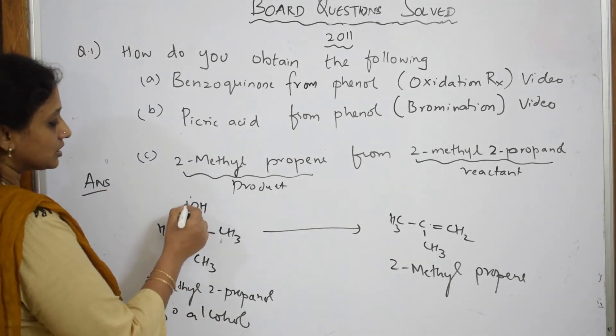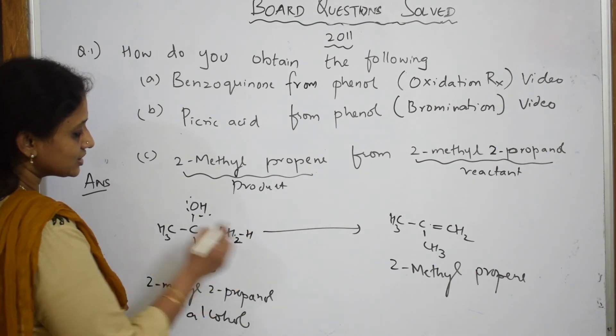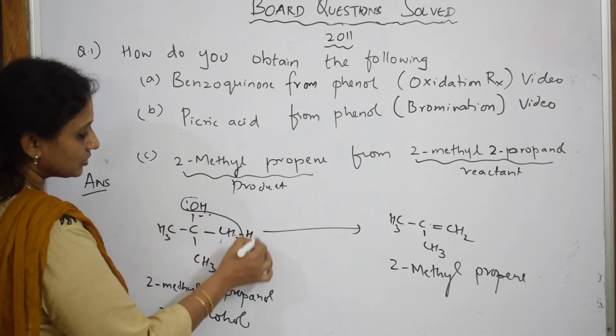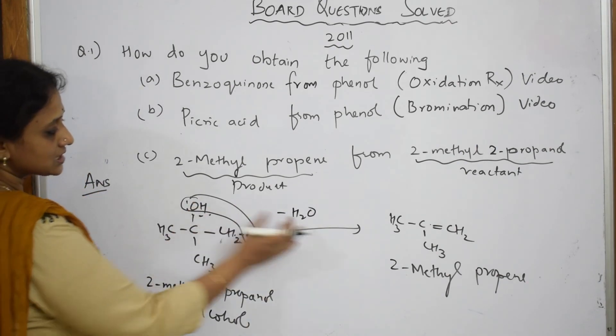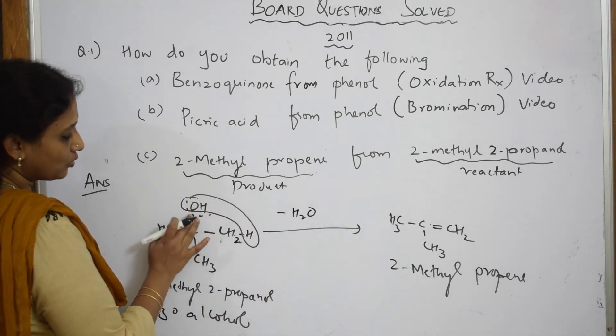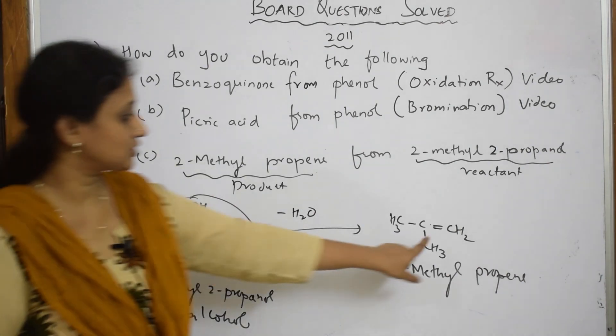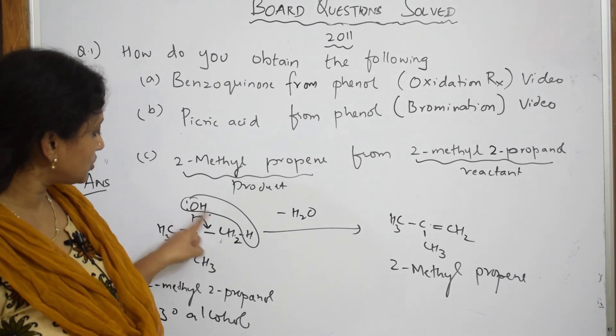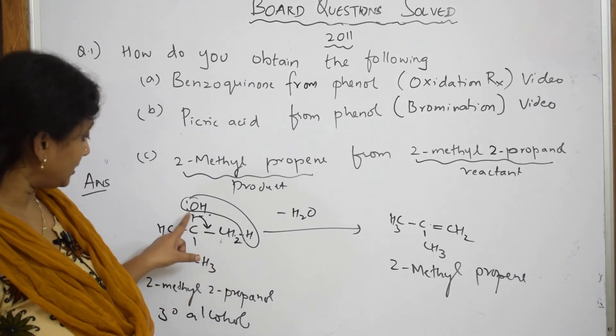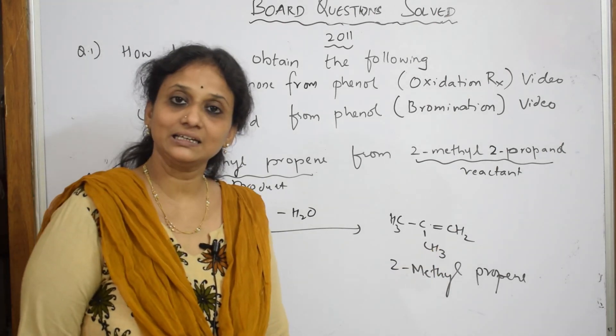So you are going to take out this H and this OH. Suppose if I write this as H, now your water is going to come out. And what happens? This bond has come out with this and the leftover bond whichever is there is going to drop here. So this has dropped. Just observe: CH3, carbon, and this OH has come out with this bond, and the bond which is there here has dropped in here. So you get alkene.